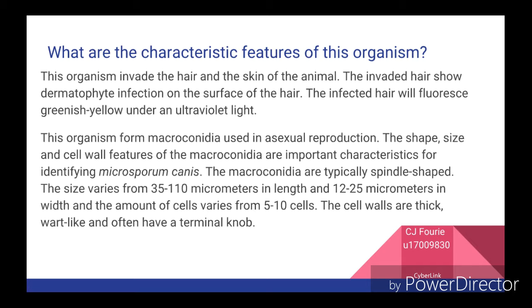The macroconidia are typically spindle-shaped. The size varies from 35 to 110 micrometers in length and 12 to 25 micrometers in width, and the number of cells varies from 5 to 10 cells. The cell walls are thick, wart-like and often have a terminal knob.